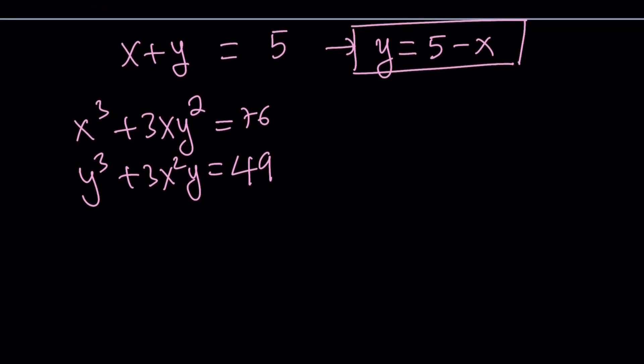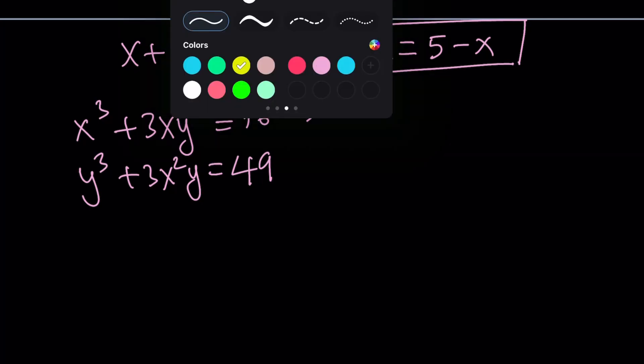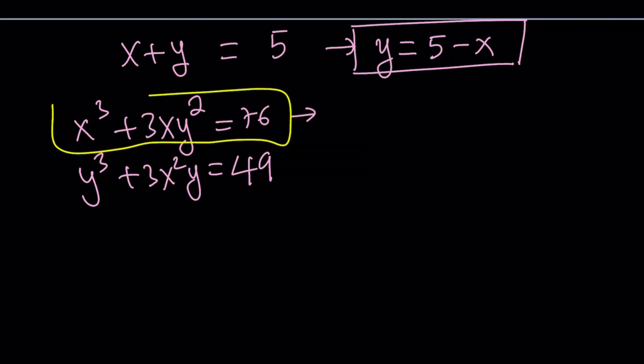Now, which one are we going to use? Really, it doesn't matter. But I want to use the second one because it is y squared, not y cubed. So I don't want to cube 5 minus x in other words because I'm too lazy. So let's go ahead and use this one, the second equation, and let's see what happens.